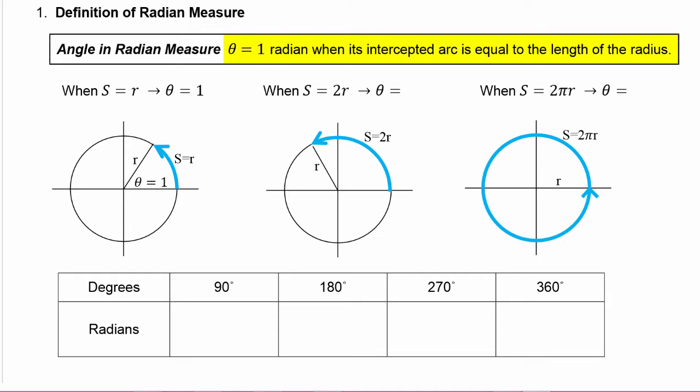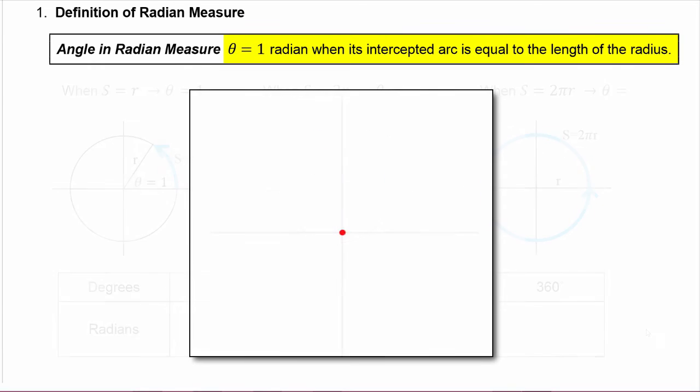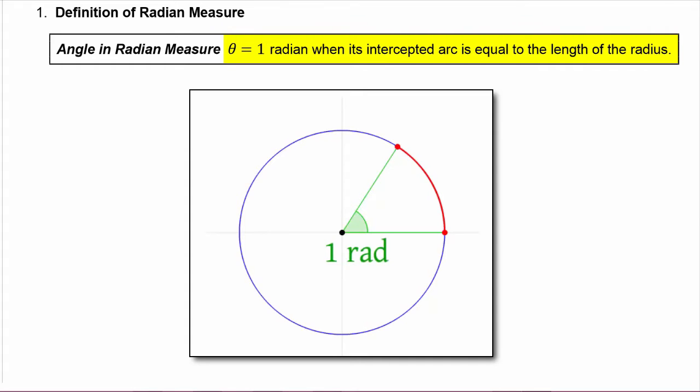So let's see how that is developed. We'll start off drawing a circle whose radius is r. Now let's take that radius and lay it along the circumference of the circle and create an angle intercepting that arc. That angle is one radian.